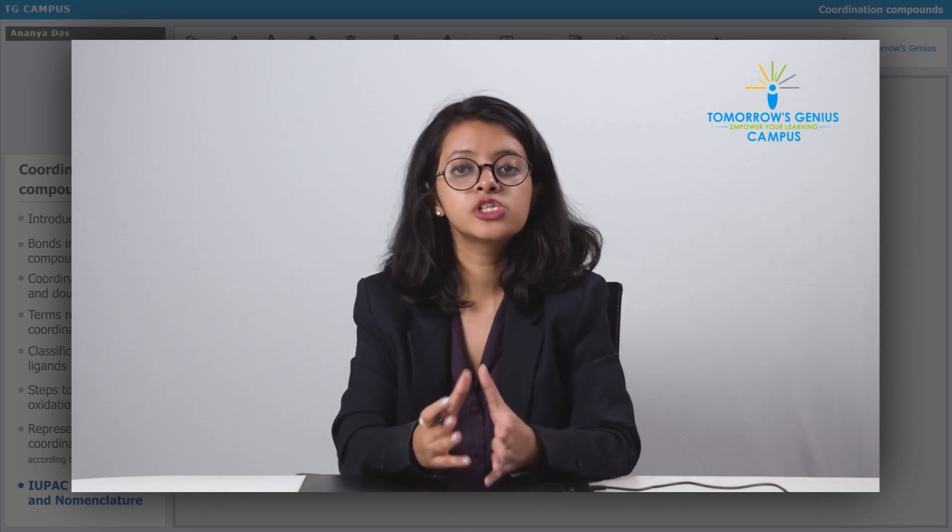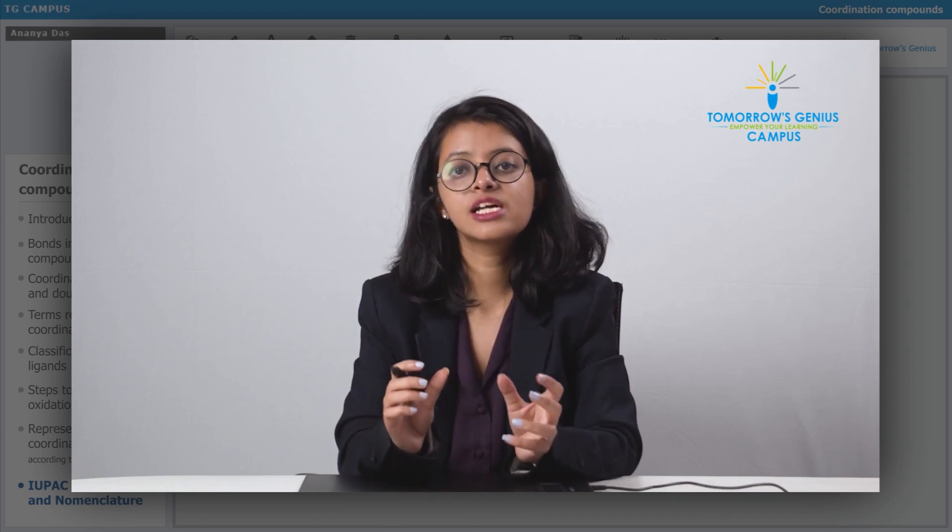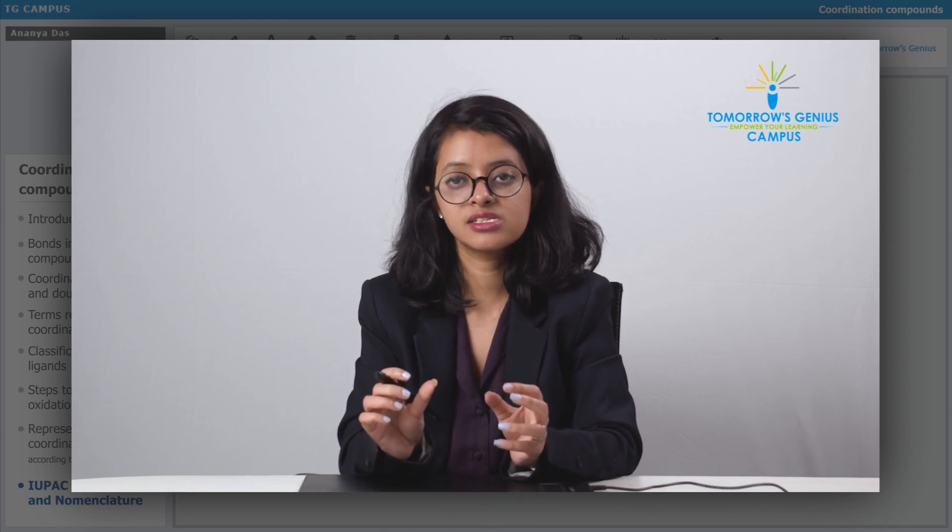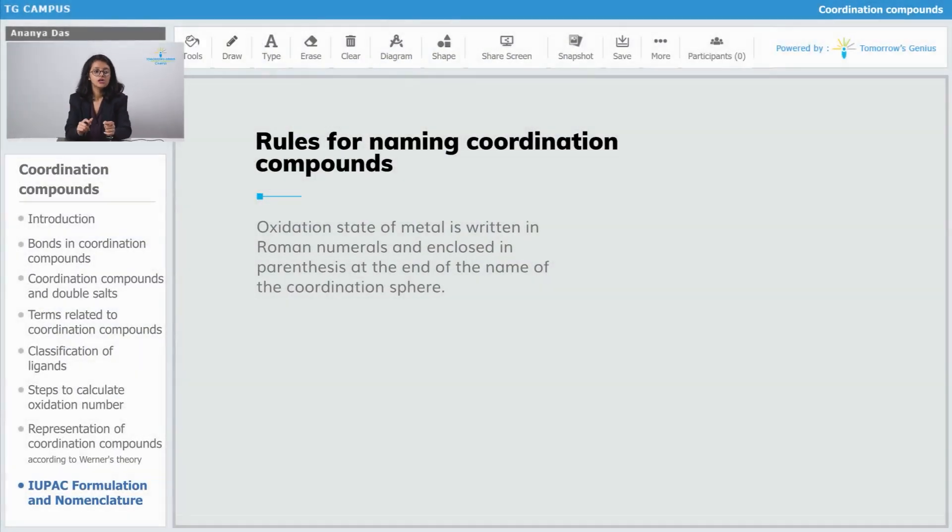In all the questions that we did till now, you would have seen that the oxidation state of the metal was written at the end in parenthesis. That is how we were calculating the charge on the entire coordination sphere.